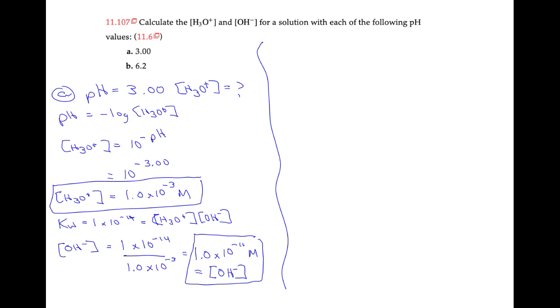So I'm going to employ the exact same strategy, except now in my pH value I only have one decimal place. That means I'm going to report my concentrations to 1 sig fig only, whereas here I had two decimal places, and that's why I reported both of them to 2 sig figs.